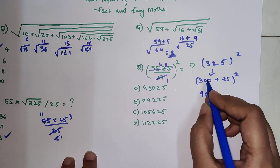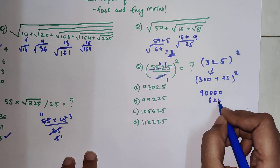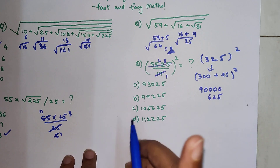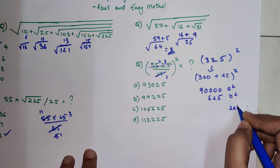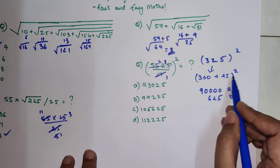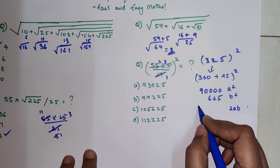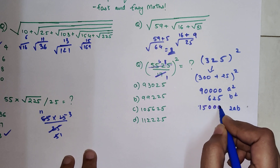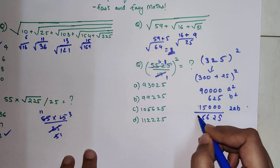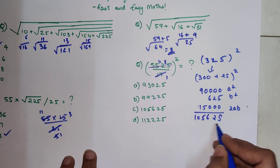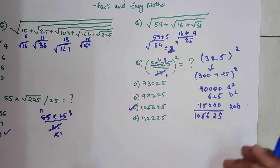Using the (a+b)² expansion: 300² is 90,000; 25² is 625; and 2 × 300 × 25 = 50 × 300 = 15,000. Adding these together: 90,000 + 15,000 + 625 = 105,625. So option C is your answer.